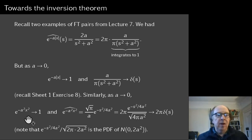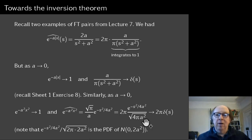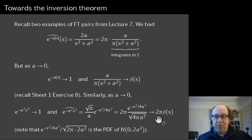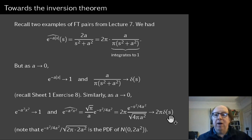A second example with the same conclusion: e^{-a²x²} has Fourier transform √(π/a) × e^{-s²/(4a²)}. Rewritten, this is 2π times the PDF of a normal variable with mean zero and variance 2a². As a→0, the variance tends to infinity, the normal density spreads out, and the transform tends to 2π δ(s). Again, the thing being transformed, e^{-a²x²}, tends to 1. Two examples confirm: a function tending to 1 has transform tending to 2π δ(s).